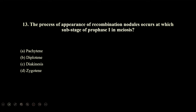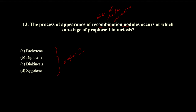The appearance of recombination nodules occurs at which sub-stage of prophase 1? Recombination nodules are sites at which non-sister chromatids undergo crossing over. This is happening only during crossing over, which takes place in the pachytene stage. Whether they ask about recombination nodules or enzyme recombinase, you have to go with the pachytene stage.